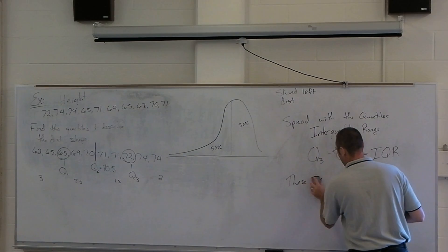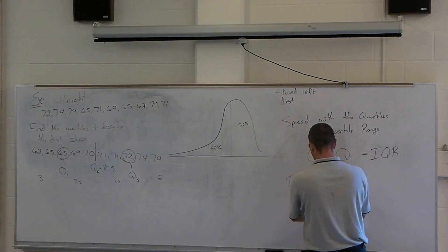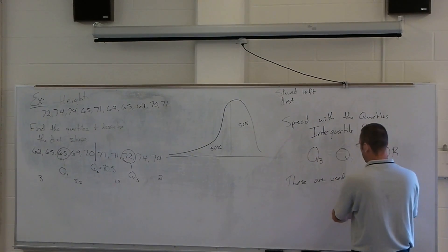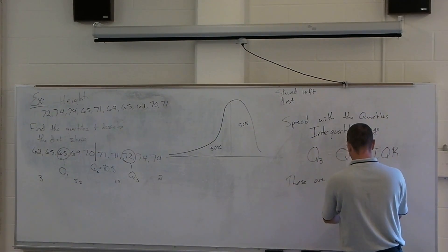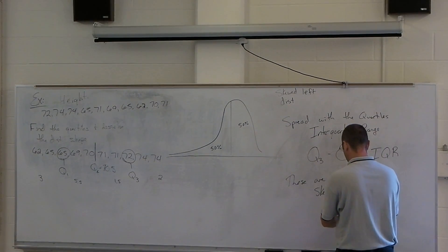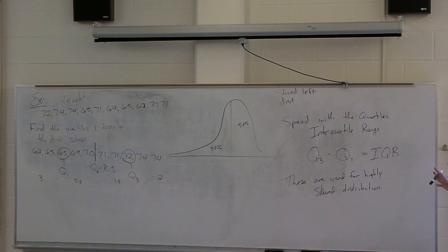So the tools of using the interquartile range and the quartile are typically whenever we have highly skewed distributions. Now that's not saying you can't use these at other times,